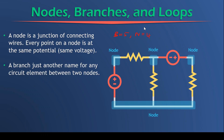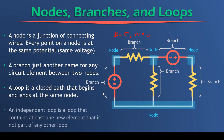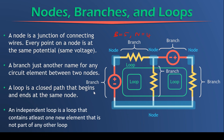What about loops? A loop is a closed path that begins and ends at the same node. We also have another definition known as an independent loop, which is a loop that contains at least one new element that is not part of any other loop. So a loop is any closed path — that's important — that begins and ends at the same node, so you start and end at the same point.